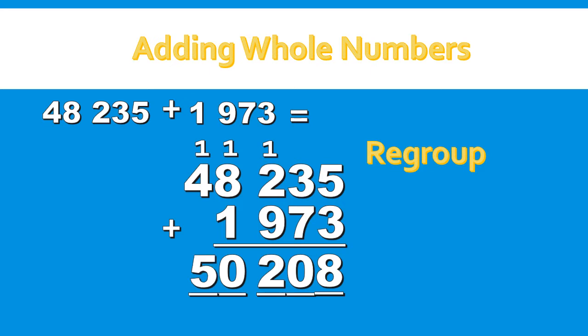1,000 plus 4,000 gives us 5,000. Our number is 50,208, therefore our sum is 50,208.